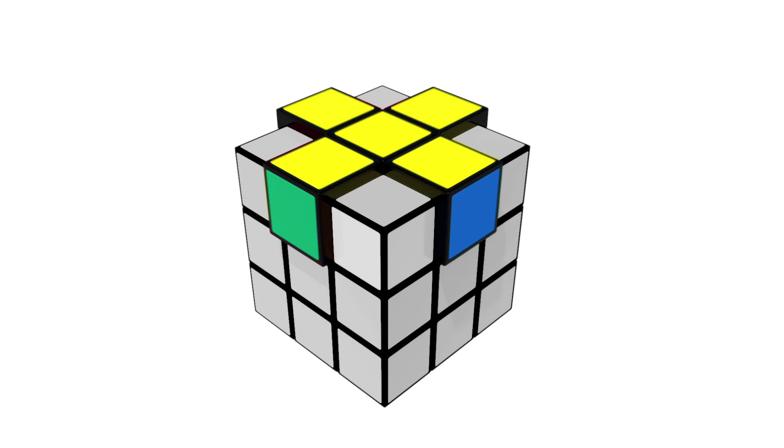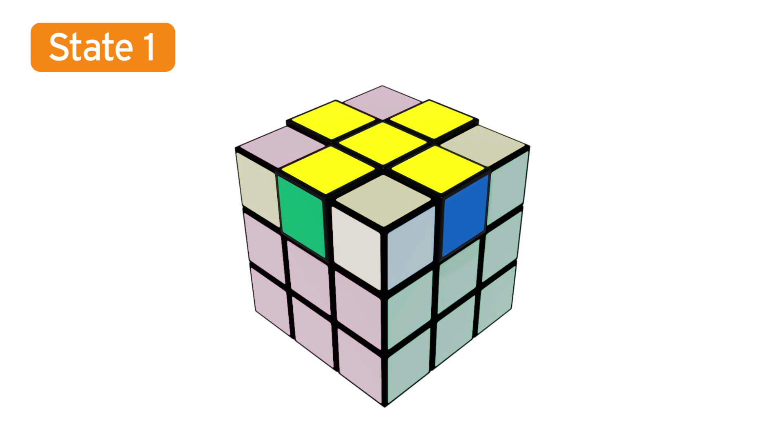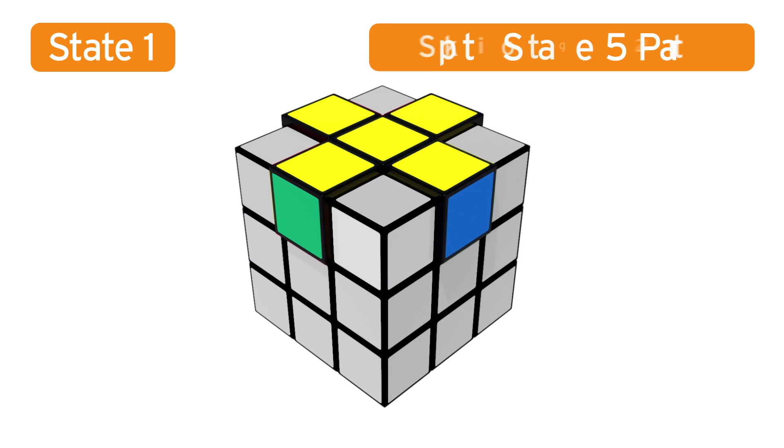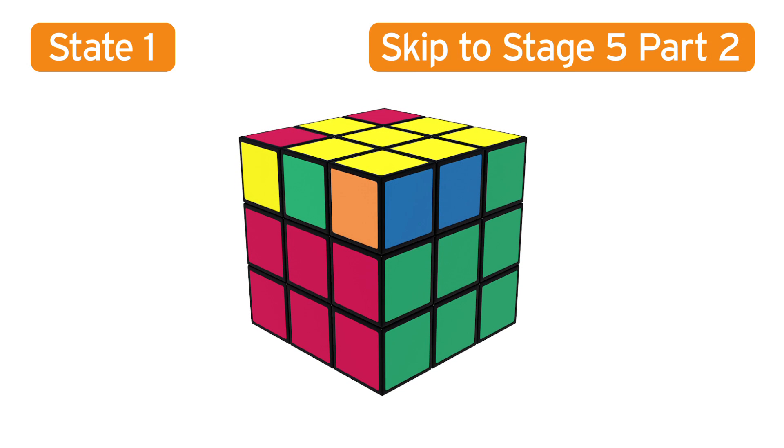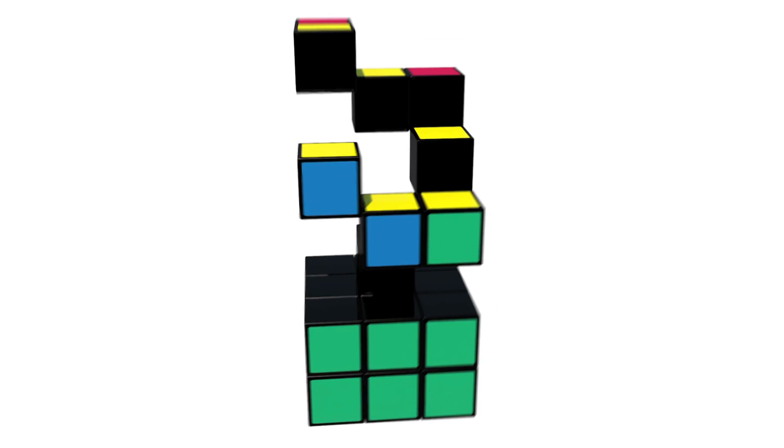If you already have a yellow cross, we'll call this State 1, like this, then lucky you. You can skip this part and go forward to Stage 5, Part 2. If not, stick around. This won't take long.